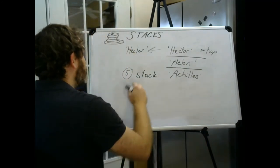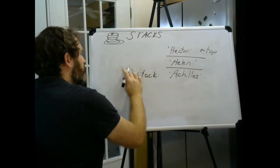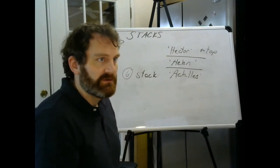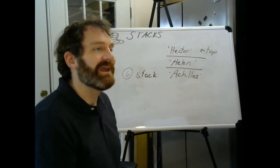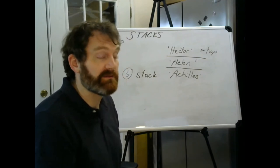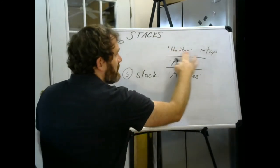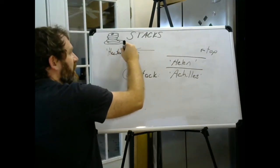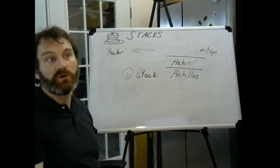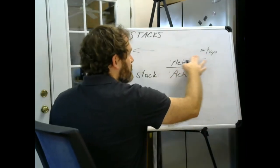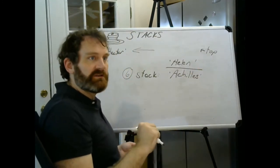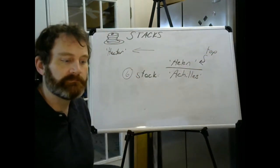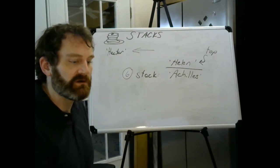Step six, now I'm going to pop. Popping removes the item from the top of the stack, removes and returns it — and that's key. In code, you can do something with that value you just removed. The top, Hector, is no longer the top, but there is still a top — it's the next person down, who happens to be Helen.